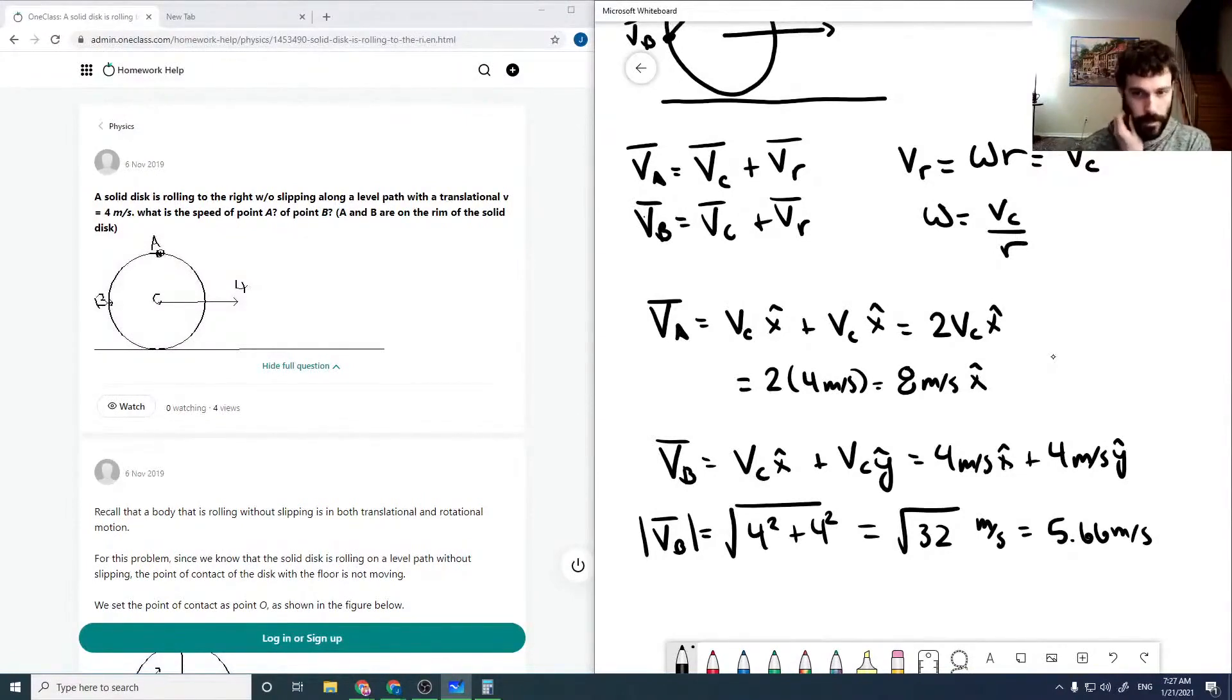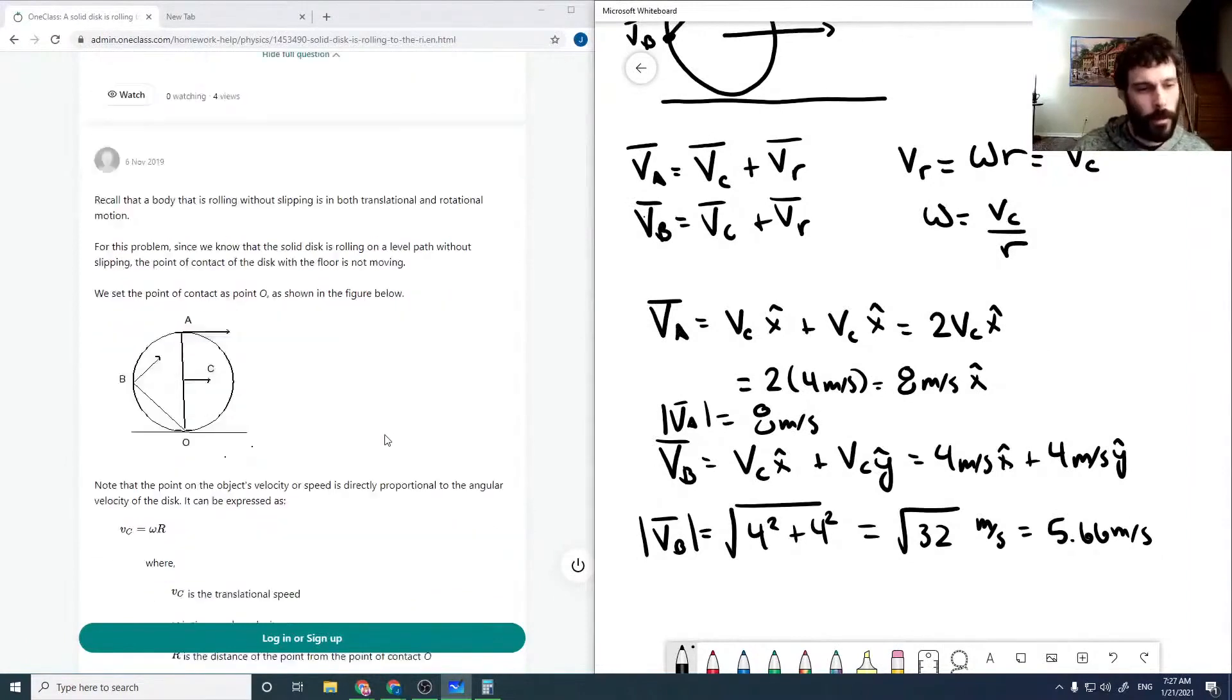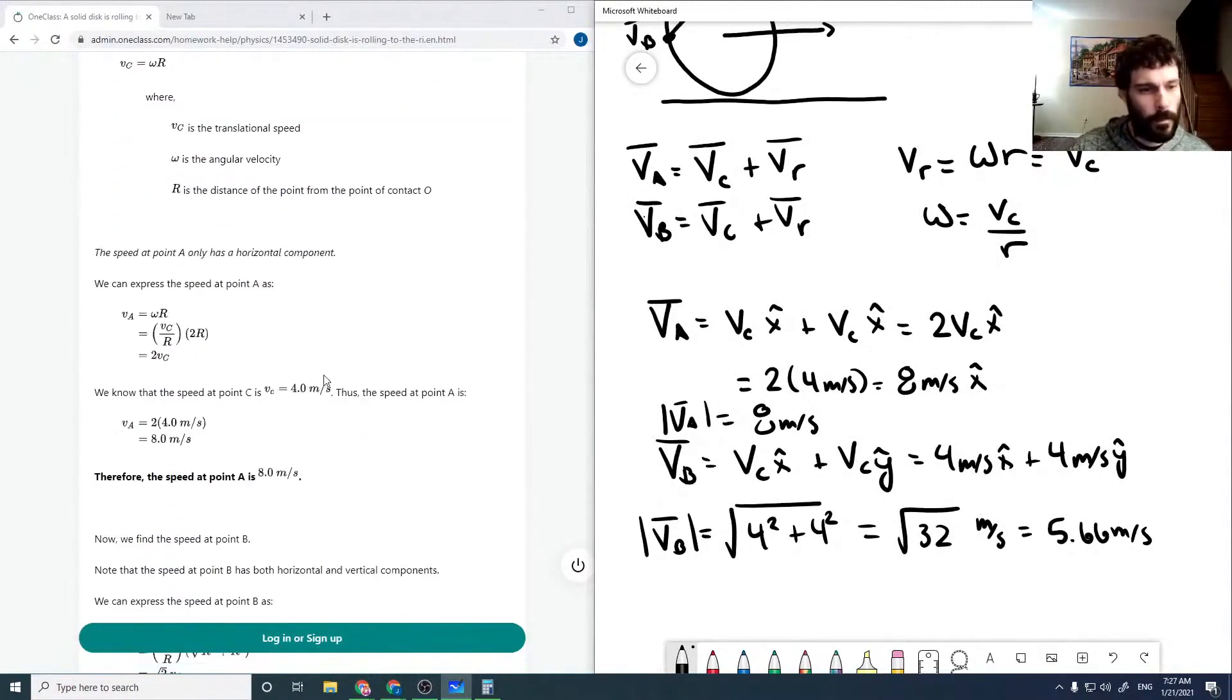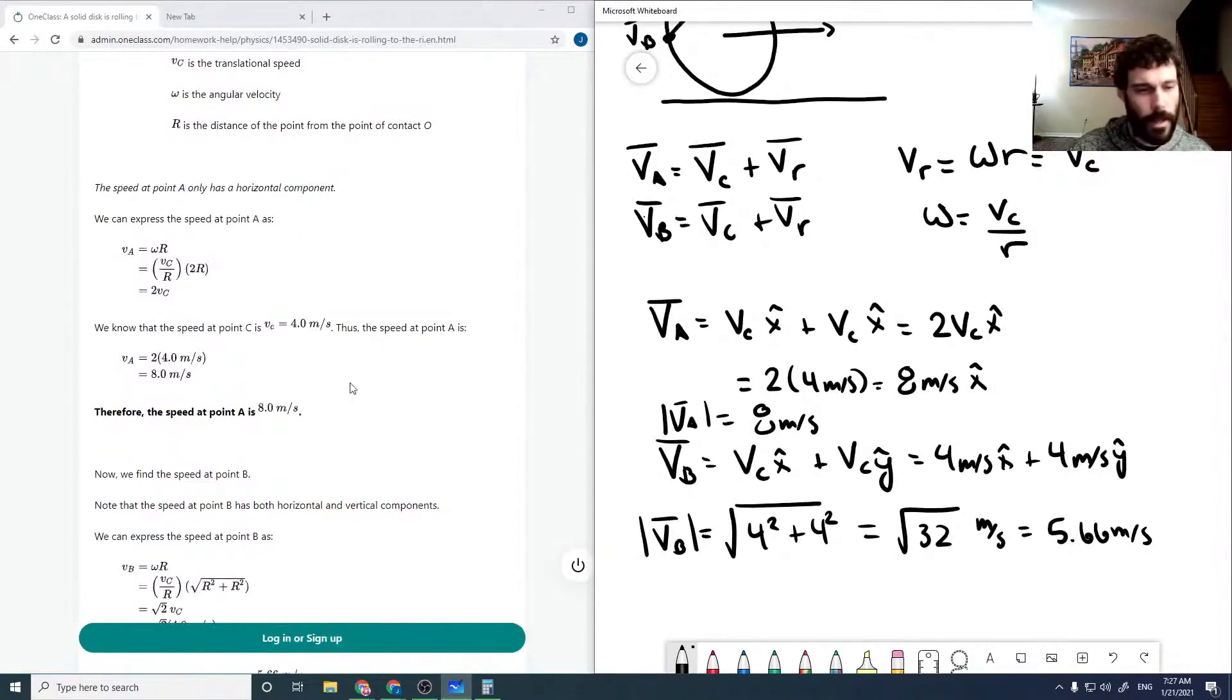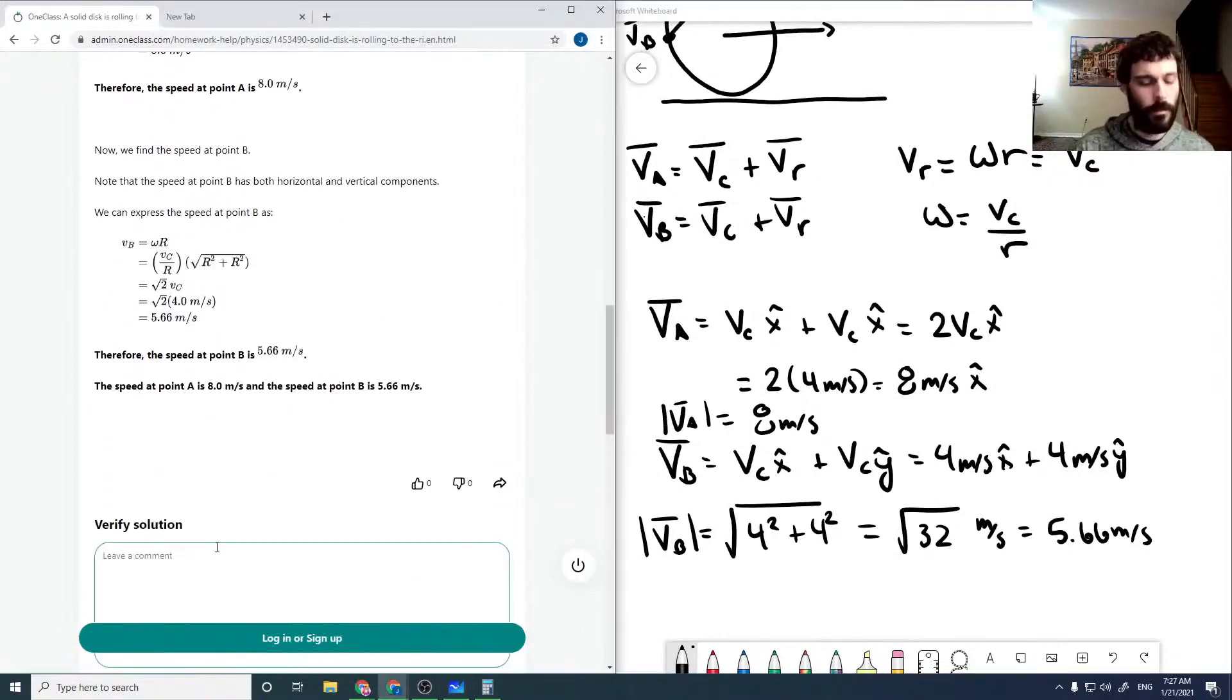And so our magnitude at A is just 8 meters per second. Okay, so checking through the solution here, the speed at A is 8 meters per second and B is 5.66. So that looks good.